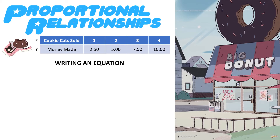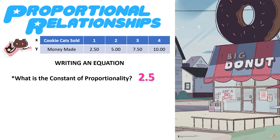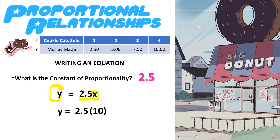How do we write an equation with this information? You need to know the constant of proportionality, which we've already solved to be 2.5. All you need to do to write an equation is sub that number in — you're going to write it like this: Y equals 2.5X. That equation tells you that your money made, represented by Y, depends on the number of cookie cats sold, X, multiplied by 2.5. For example, if I asked how much money you made by selling 10 cookie cats, you plug 10 in for X and get $25.